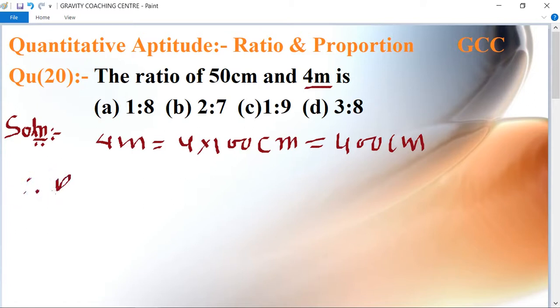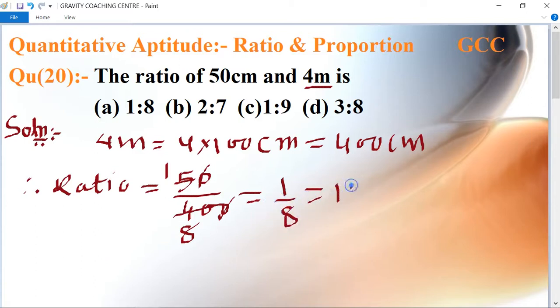50 upon 400. Cancel the zeros. Using the table of 5: 5 times 8 is 40, so 1 upon 8. This means 1 ratio 8 is the required answer. So 1:8 is the answer. Option A is the right answer.